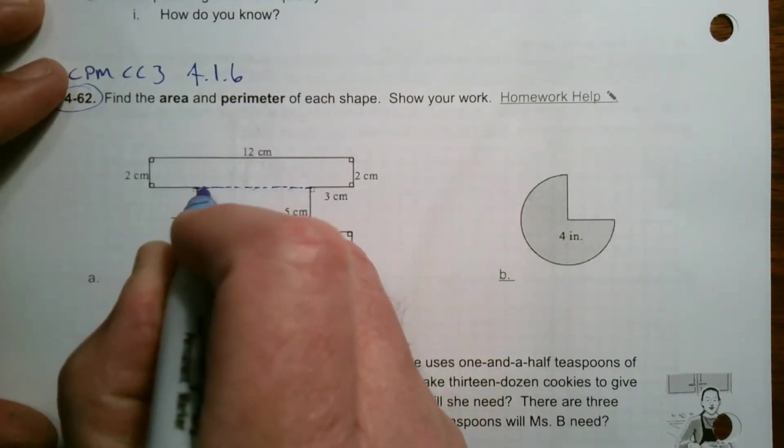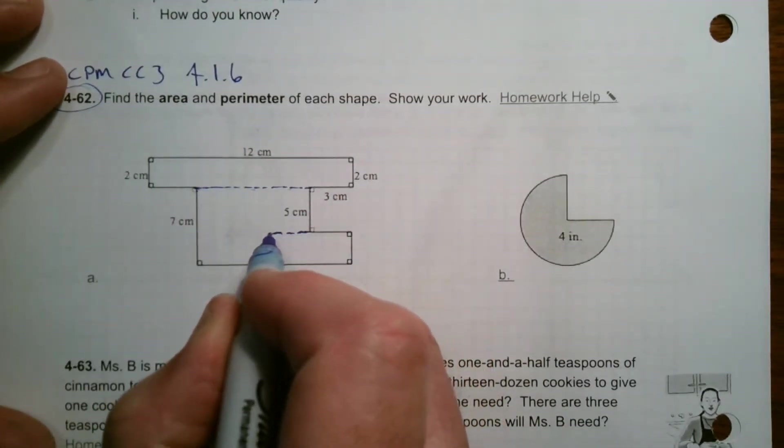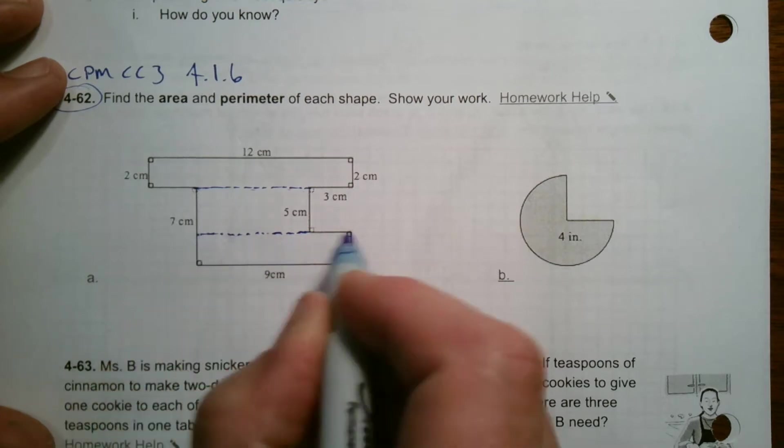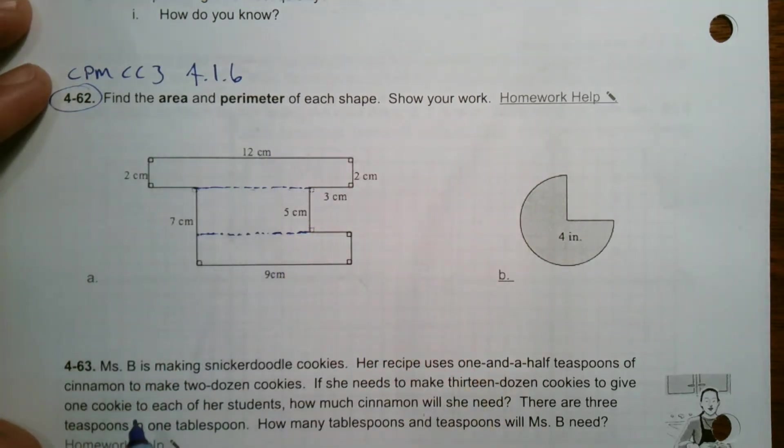I'm going to draw kind of a dash line there. So I have this long rectangle this way, and then if I take this one and do the same thing, this direction, then I have a long rectangle that way. So I have one, two, three, three different spaces that I need to find the area for.